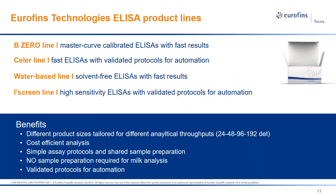Eurofins Technologies has developed the ELISA technology for mycotoxins analysis into four different product lines, providing industries with values such as different product sizes tailored for different analytical throughputs — 24, 48, 96 and 192 determinations — cost efficiency, simple and shared sample preparation protocols, the absence of sample preparation in case of milk analysis, and validated protocols for automation solutions.